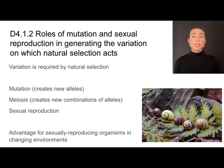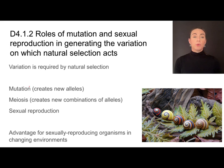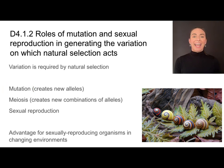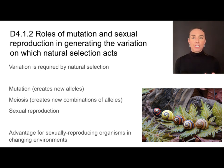Variation is one of the requirements for natural selection, and there are three main sources of variation in populations. Mutations can occur in any organism, and this creates new alleles — new versions of genes.